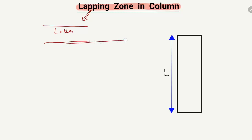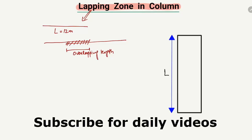For example, this is one steel bar, and then we overlap the steel bars here — this is known as the overlapping length of the steel bar. This overlapping length depends on the member. For beams we have different values, for columns we have different values, and for slabs we have different values of the overlapping length.